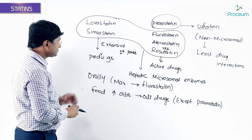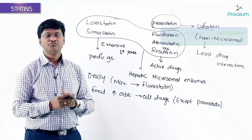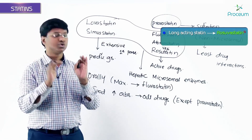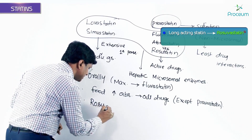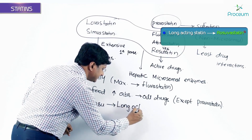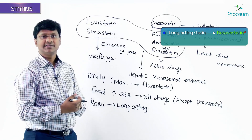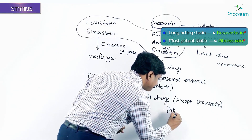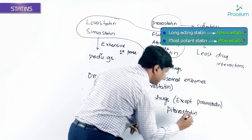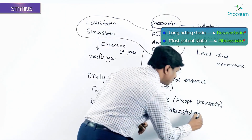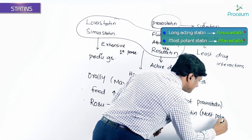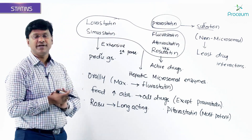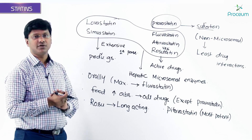Among all the statins, the longest acting statin is rosuvastatin — this will be a multiple choice question. Whereas the most potent statin is pitavastatin. These are some important points about the pharmacokinetics and pharmacodynamics of statins.